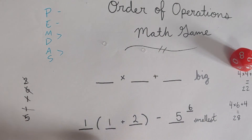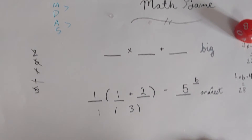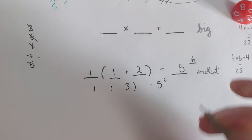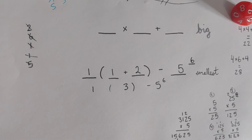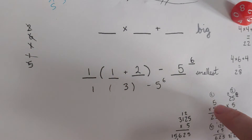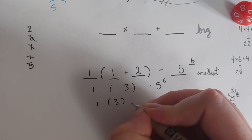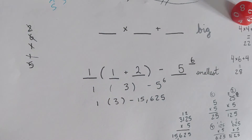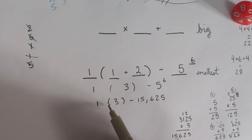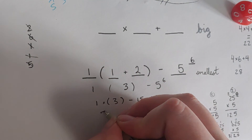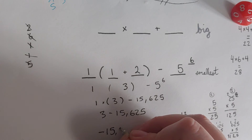Using order of operations — parentheses first: one plus two equals three. I'll rewrite as I go to keep track. Next is exponents: five to the sixth power. Five times five times five times five times five times five is 15,625. So we're at minus 15,625. Now multiplication: a number touching the side of parentheses automatically means multiplication, so one times three is three. Finally: three minus 15,625 equals negative 15,622.